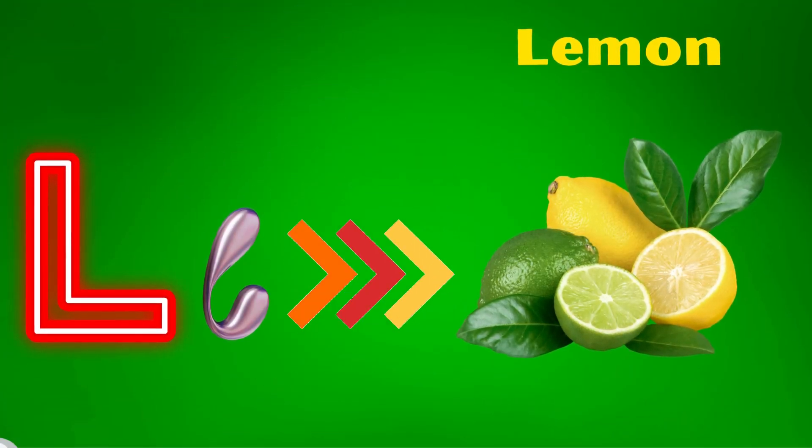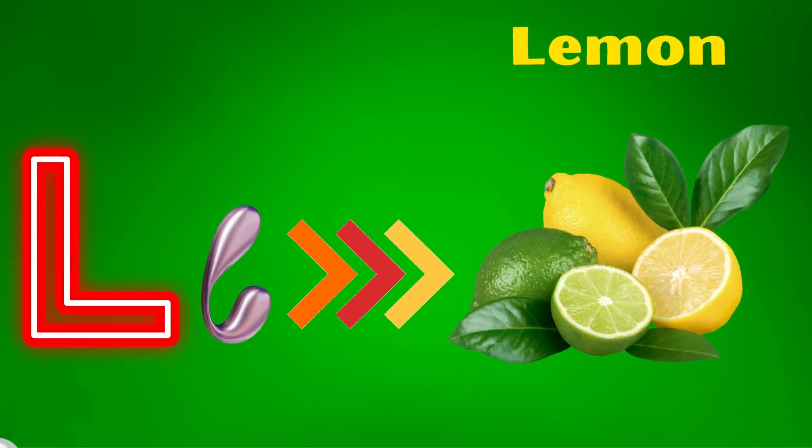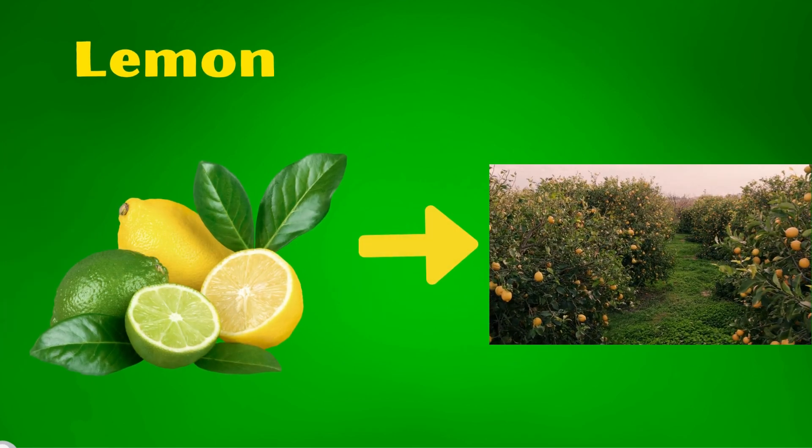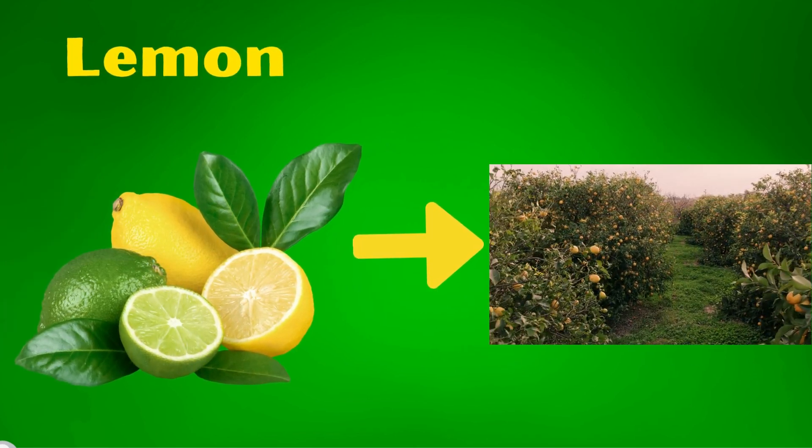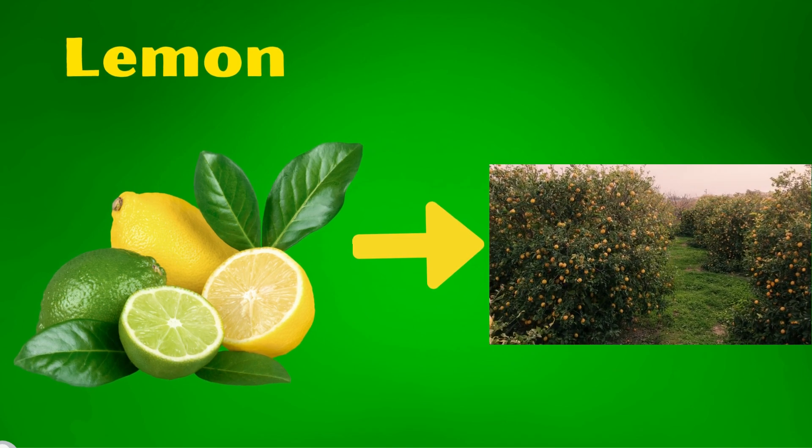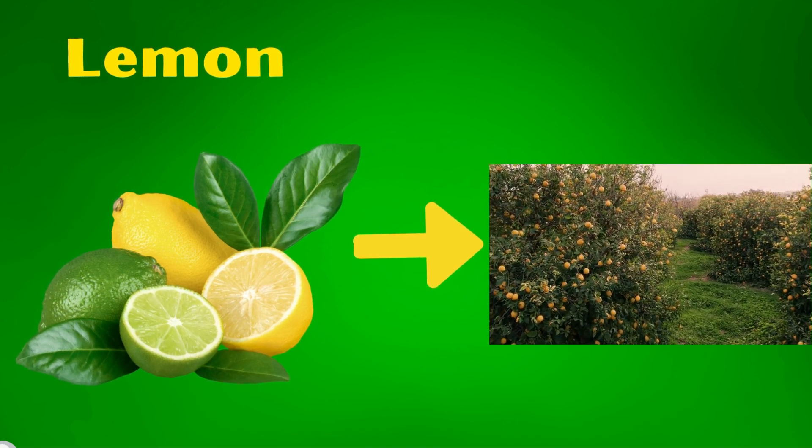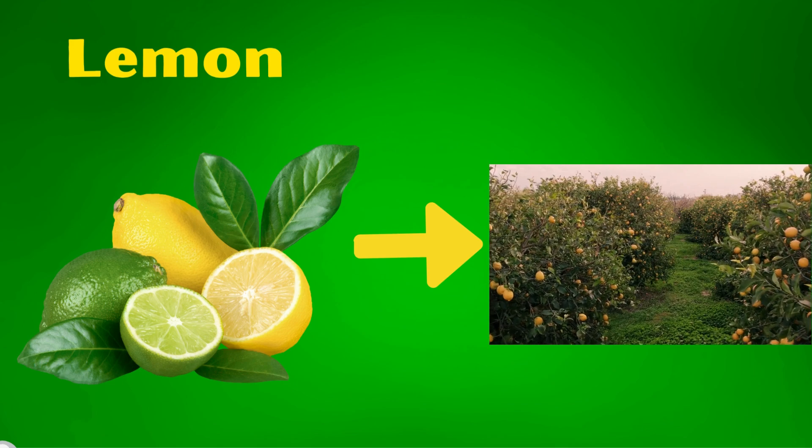L for lemon. The lemon tree is an evergreen shrub or small tree with aromatic glossy dark green leaves and scented white flowers in summer.